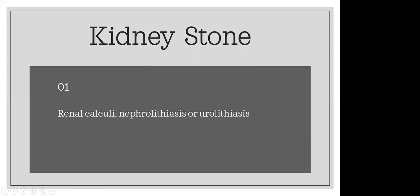As we all know, kidney stone is also called renal calculi, nephrolithiasis, or urolithiasis. These terms are interchangeable — you can use any term you like. During ultrasonography, renal calculi can be easily seen in the collecting system, and we can scan using a 3.5 megahertz transducer.